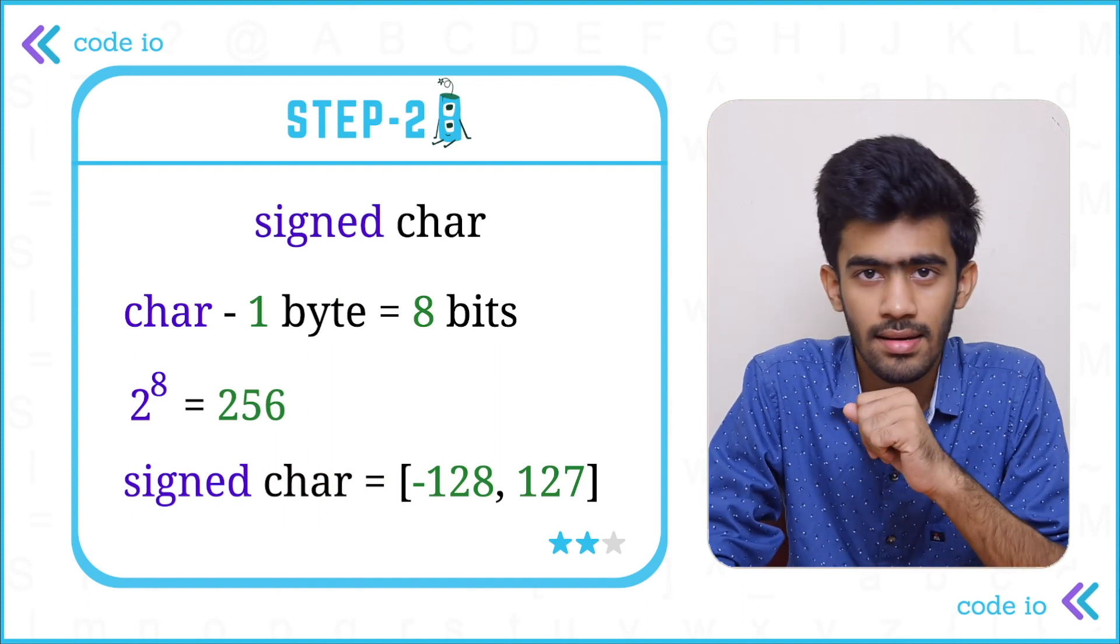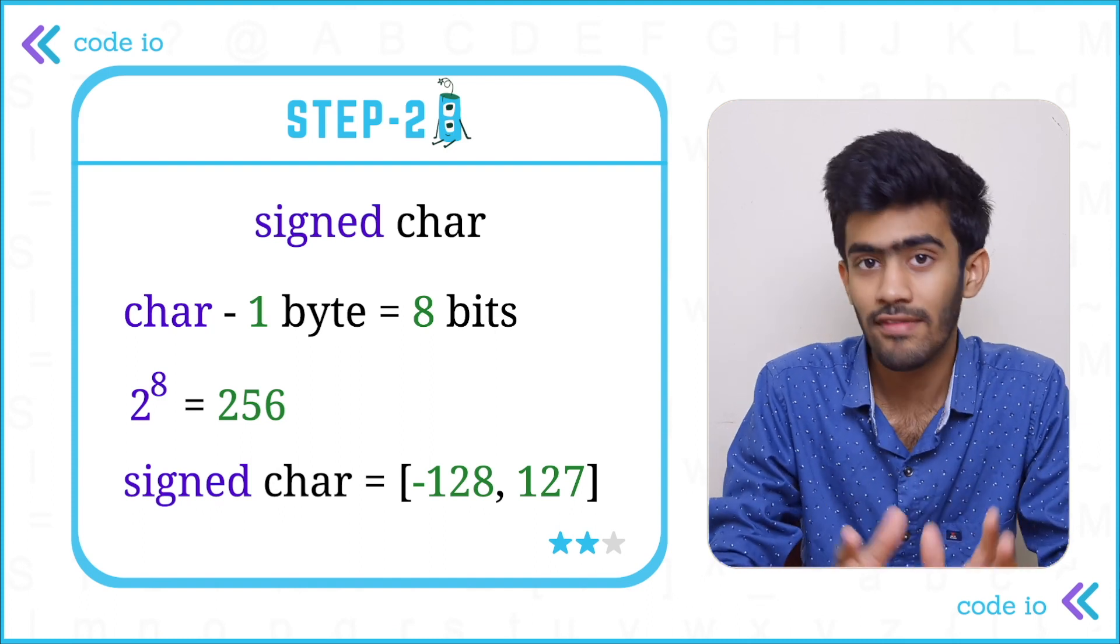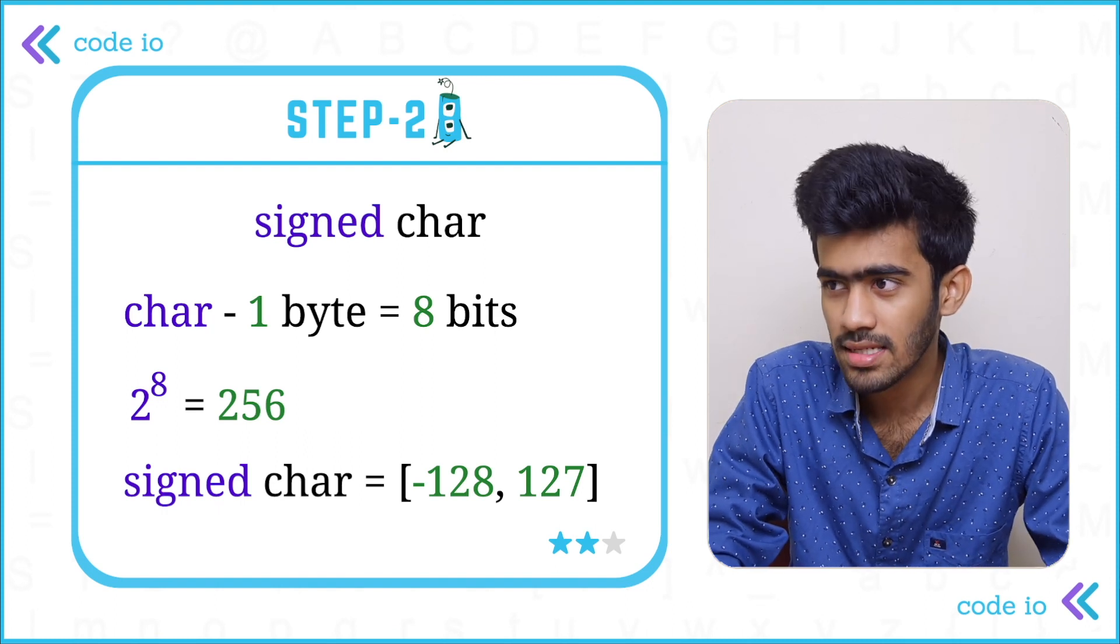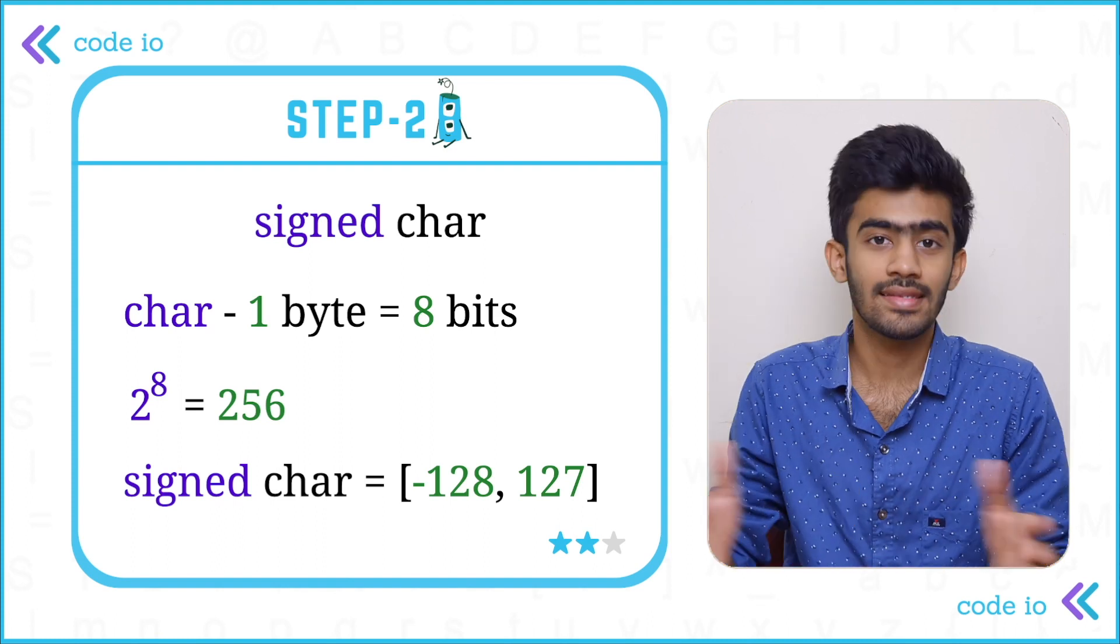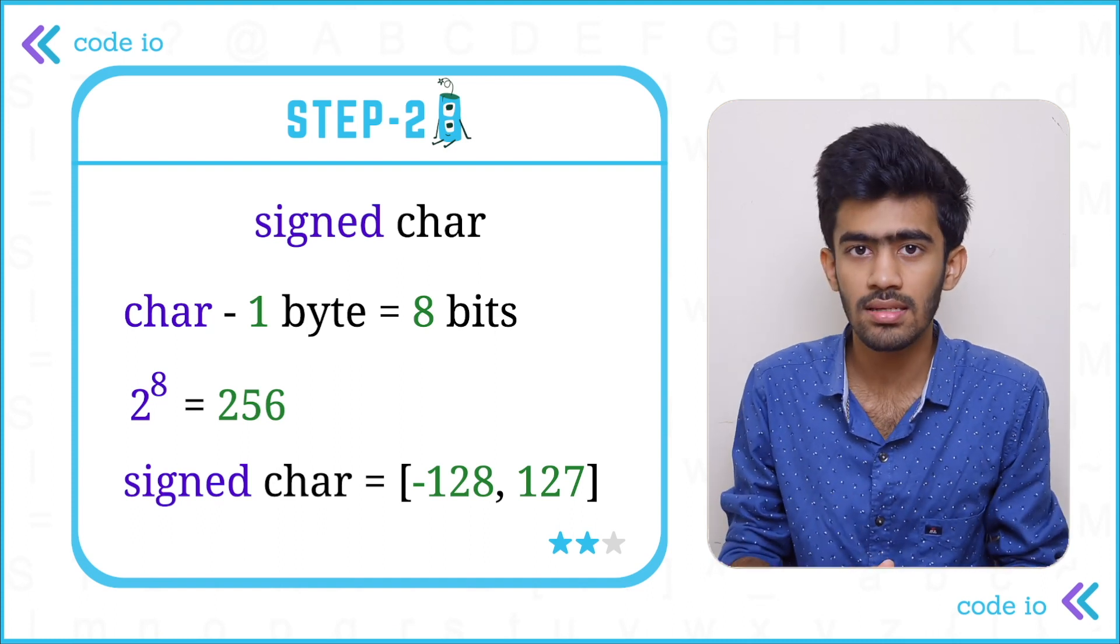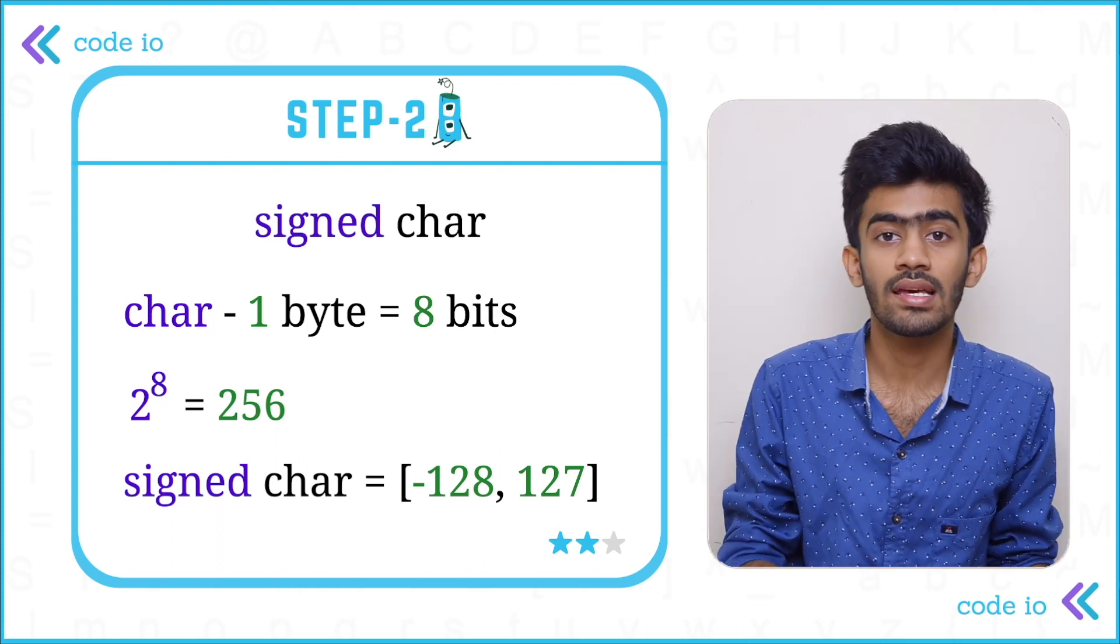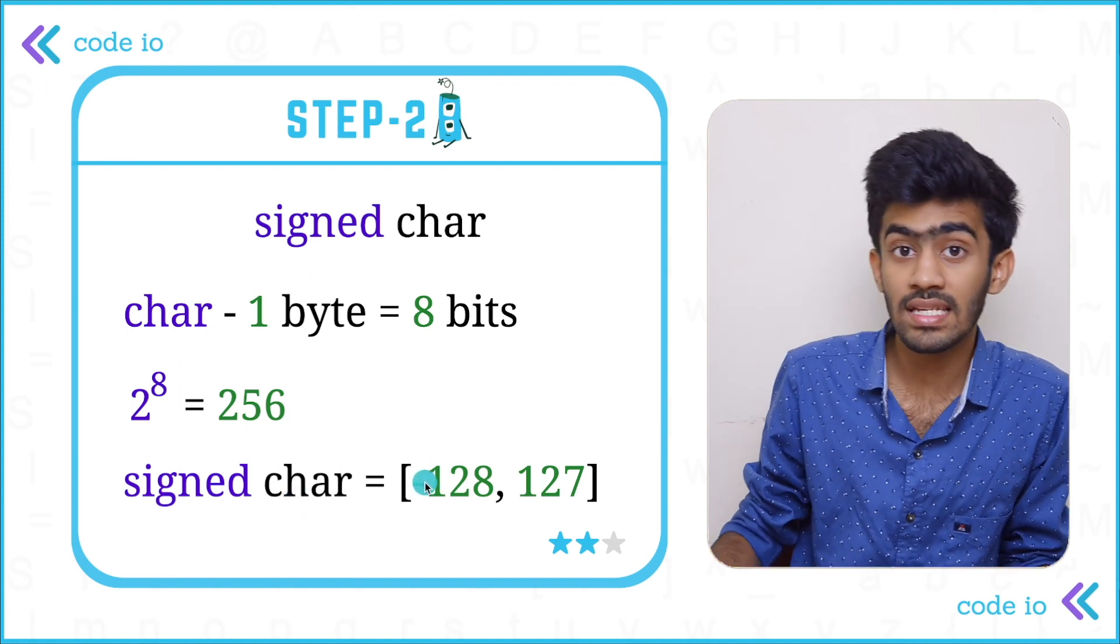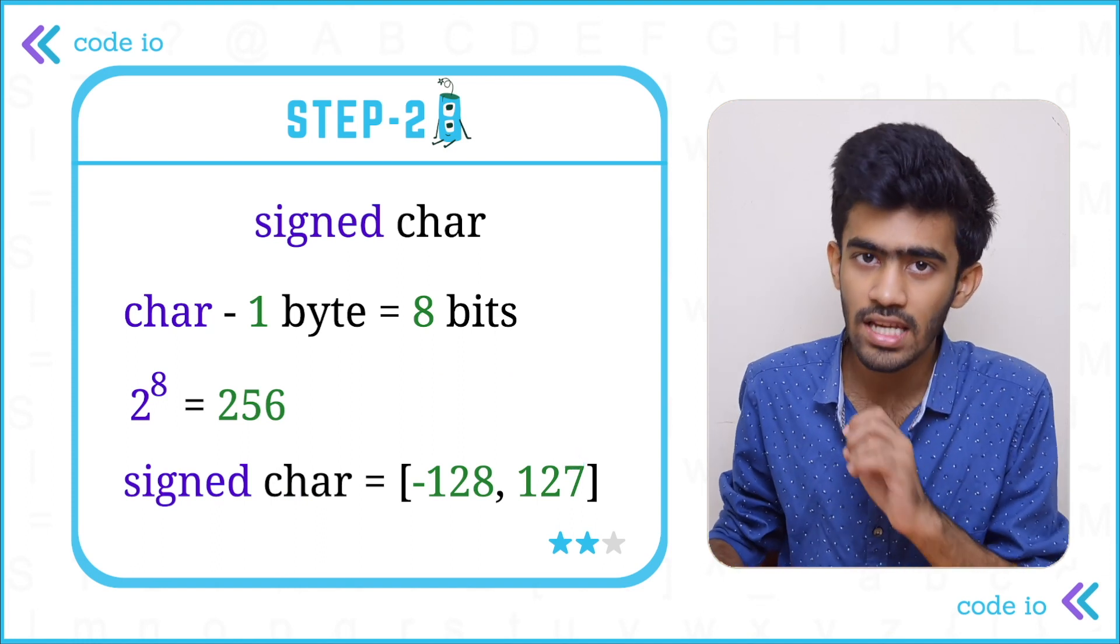So we have a signed character data type here. The character can store 1 byte, that is it takes 1 byte and the total number of bits is 8 bits. So how many characters or how many different numbers can we store in this 1 byte? That is 8 bits. So 2 power 8 numbers, that is 256 numbers can be stored in a character, that is signed character. So what do we mean when it is signed? It could be negative as well as positive. So the range of this signed character goes from minus 128 all the way up to 127. Why 127? Because we are also including 0 in this case.